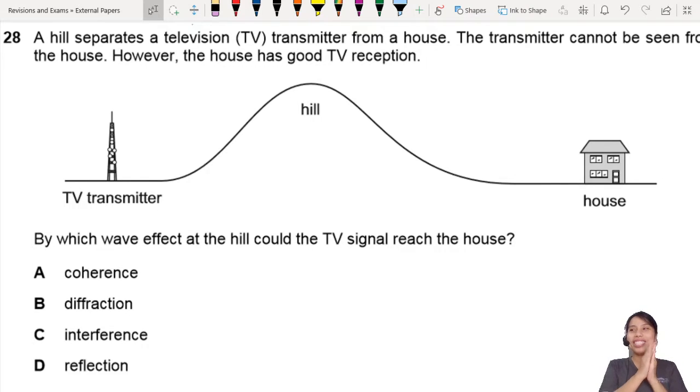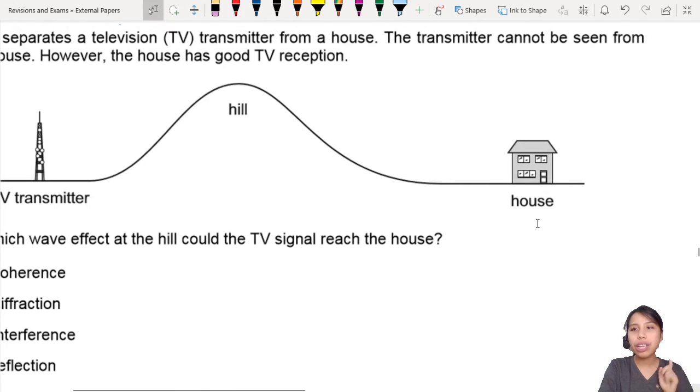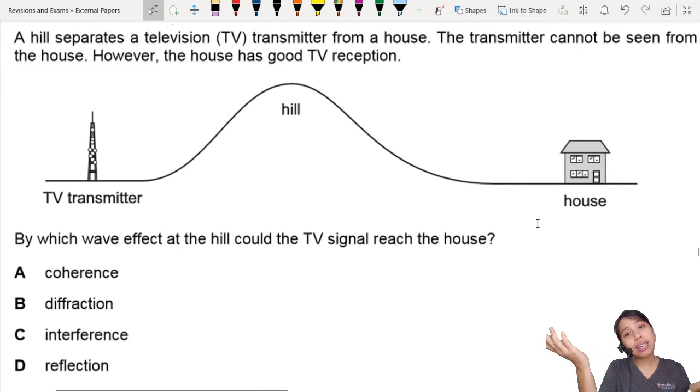This question looks so pretty, I like it. A hill separates a TV transmitter from a house. The transmitter cannot be seen from the house, but the house has good TV reception. By which wave effect at the hill could the TV signal reach the house?